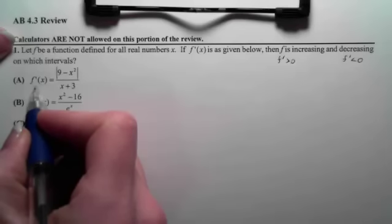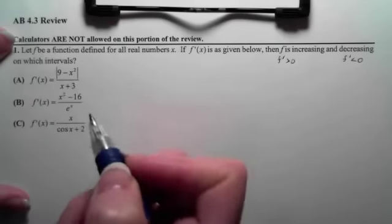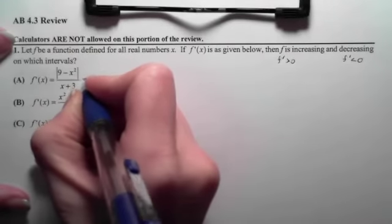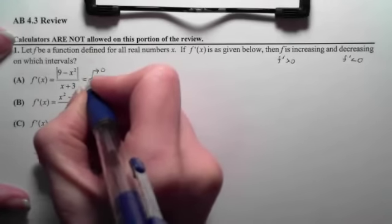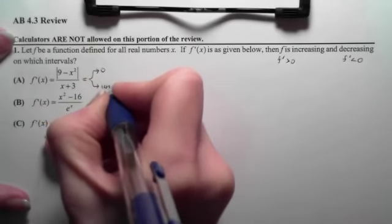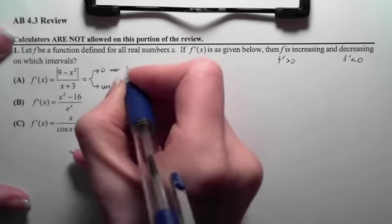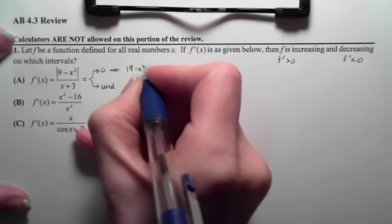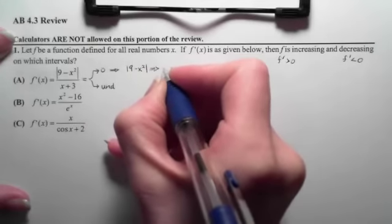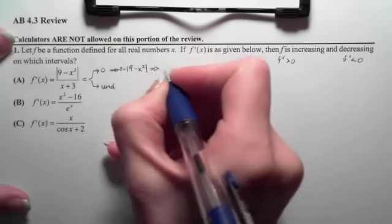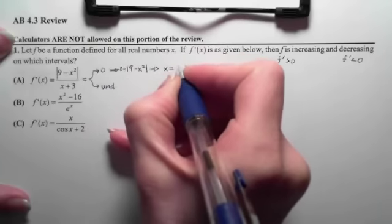And the only place that we will change sign is at the critical values on f. So that means we will need to be looking for when this is 0 and when this is undefined. Recall that we equal 0 when the top equals 0 and that is going to occur when x is plus or minus 3.